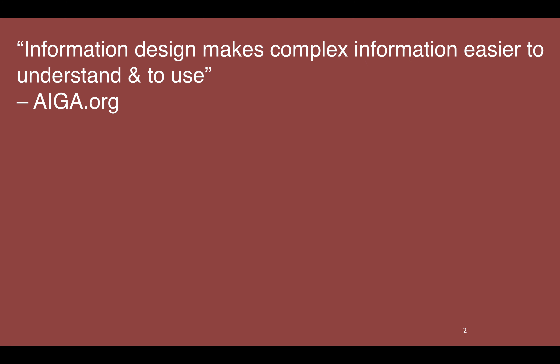Hey, welcome back. For this lecture we're going to talk about different issues in information design — more specifically, how do you define information design? By defining this term in various ways, you can get a broader view of what information design is. Here's the first definition, by AIGA: information design makes complex information easier to understand and to use. This definition talks about the utility of understanding and usefulness for information and information design.